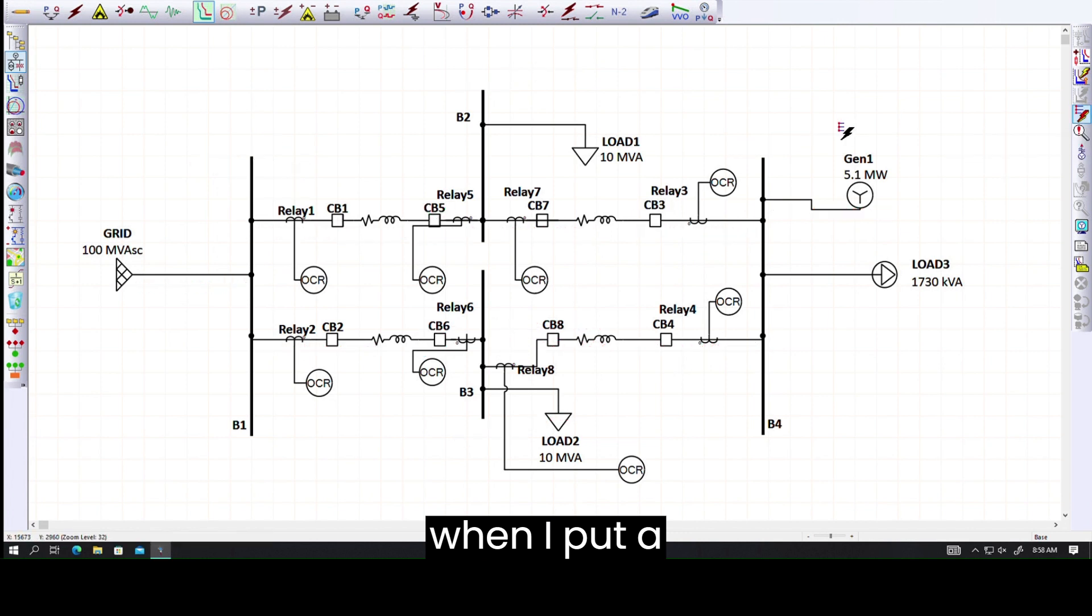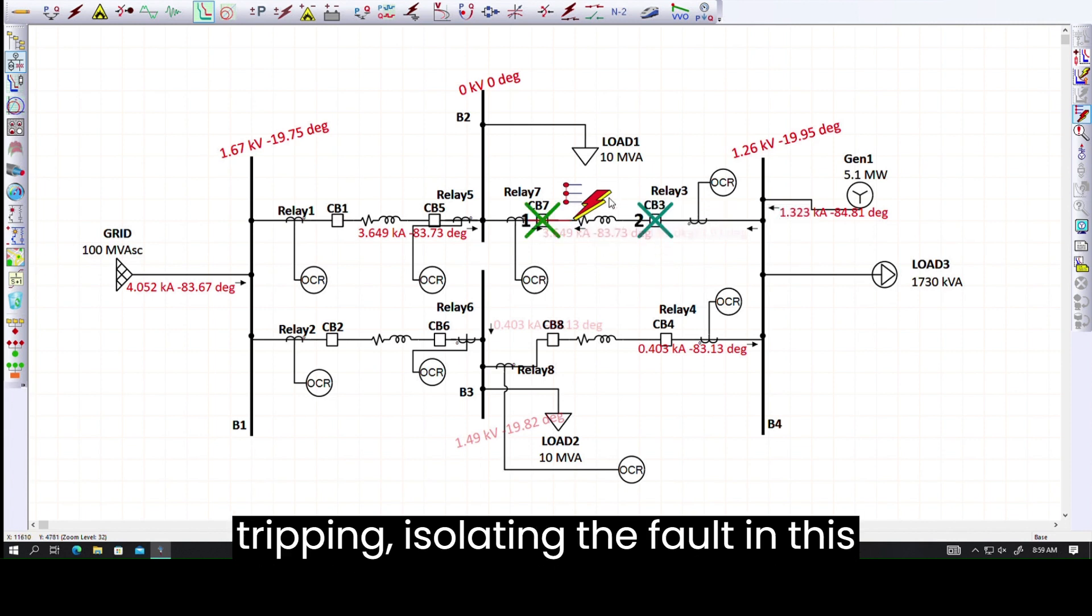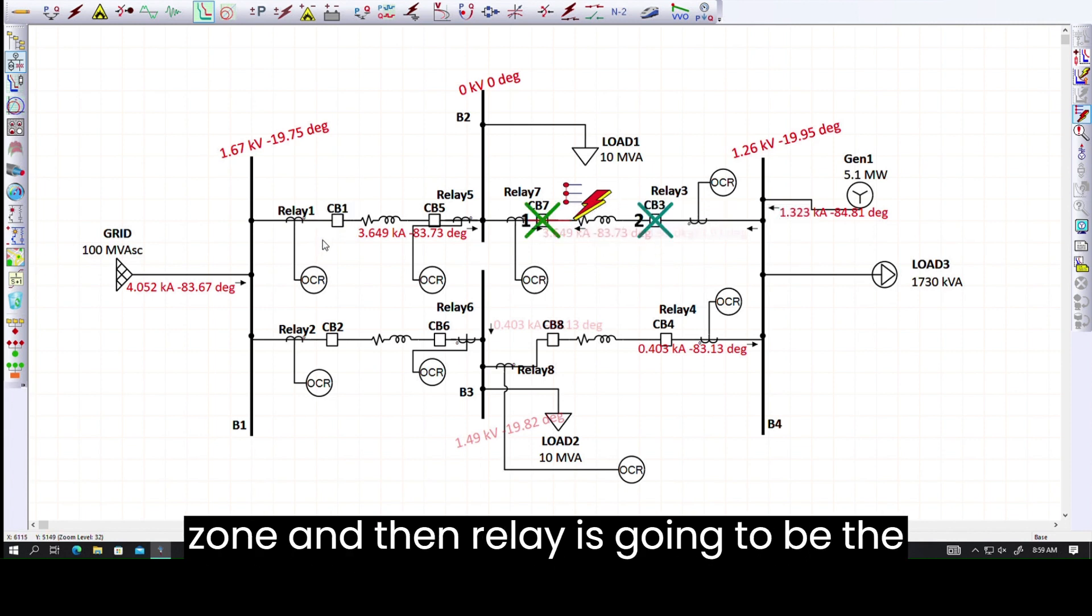Now if we want to figure out or observe the fault in between the lines, right here I have a line in between relay 7 and relay 3. When I put a fault right here, relay 7 and relay 3 are going to be tripping, isolating the fault in this zone, and then relay 1 is going to be the backup.